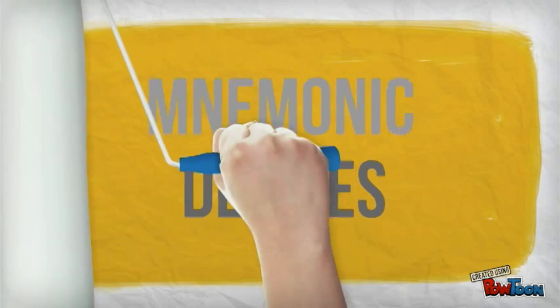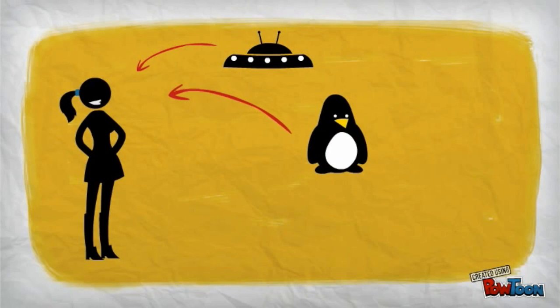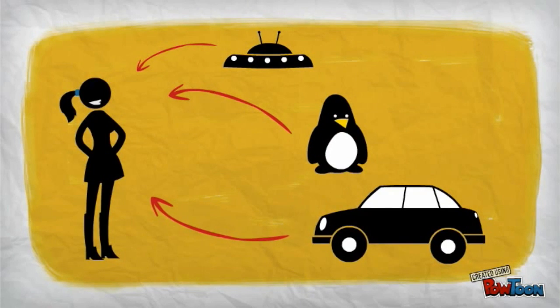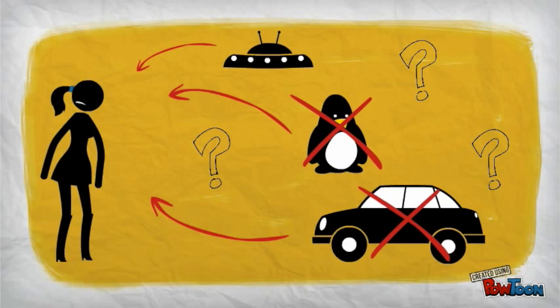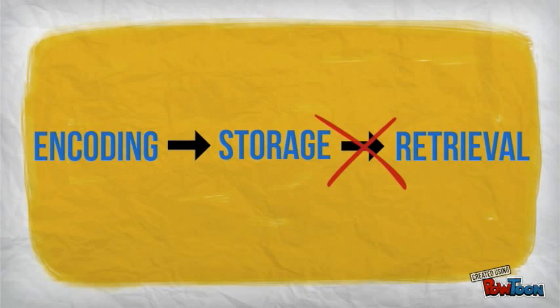Mnemonic devices. You get information in that little brain of yours by encoding and storing basically everything that you perceive. But then the trouble is this. Most of what we perceive will never be retrieved or accessed when we need it. This is the bottleneck in our memory process.